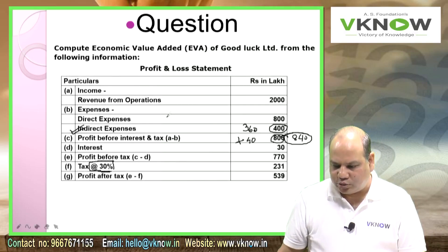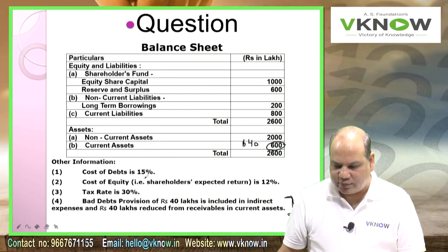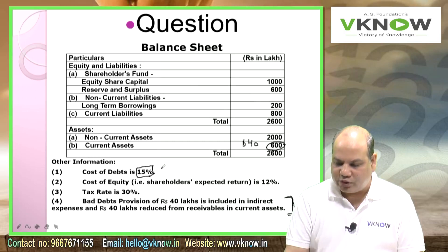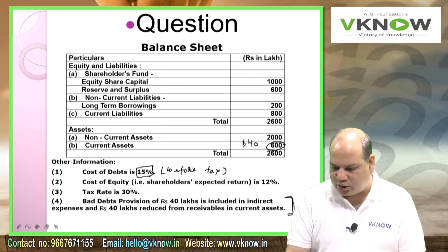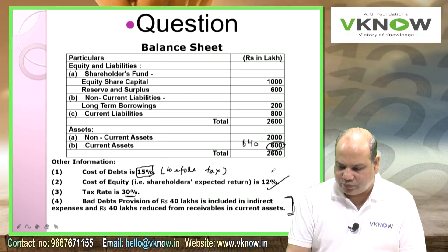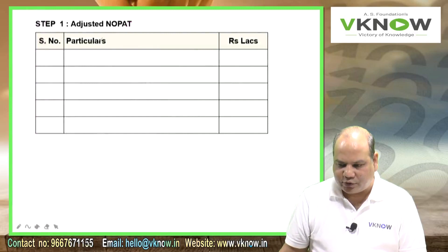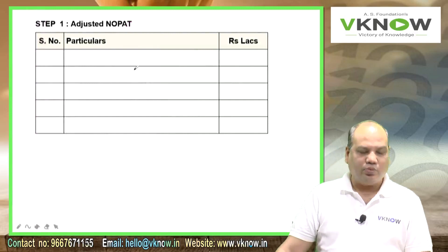Let us quickly go through the question. You are given a P&L account and a balance sheet. Cost of debt and cost of equity are given. The question is not clear whether cost of debt 15% is before or after tax, so we will assume it is a before-tax cost of debt, giving 10.5% after tax. This will help us calculate WACC, then NOPAT, then EVA.